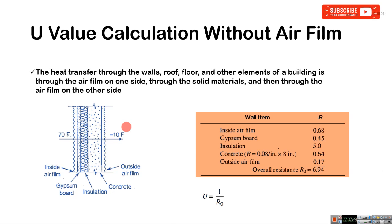The heat transfer through the wall, roof, floor, and other elements of building is through the air film. One side, this is outside air film, through the solid material - this is gypsum, insulation, concrete, solid materials - and then through the air film on the other side. It is the other side air film. See inside the building, it is the outside the building.